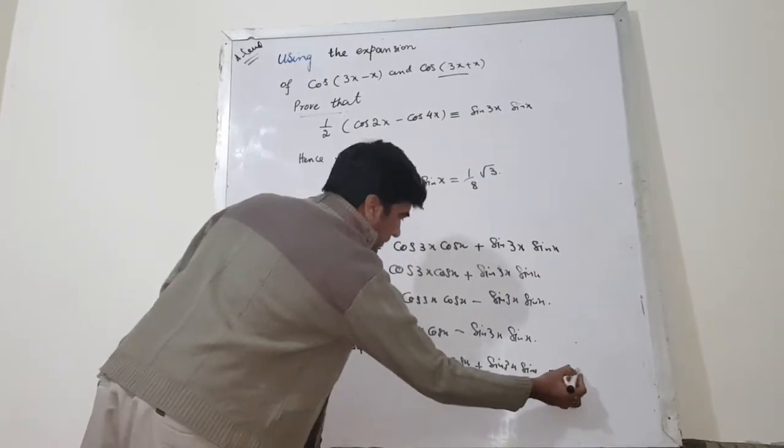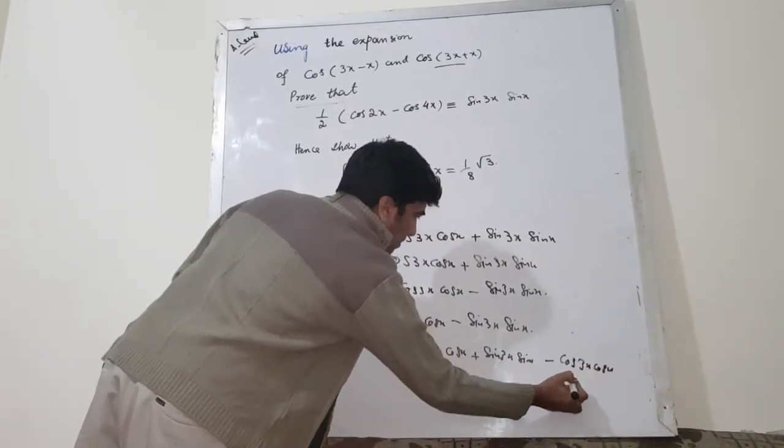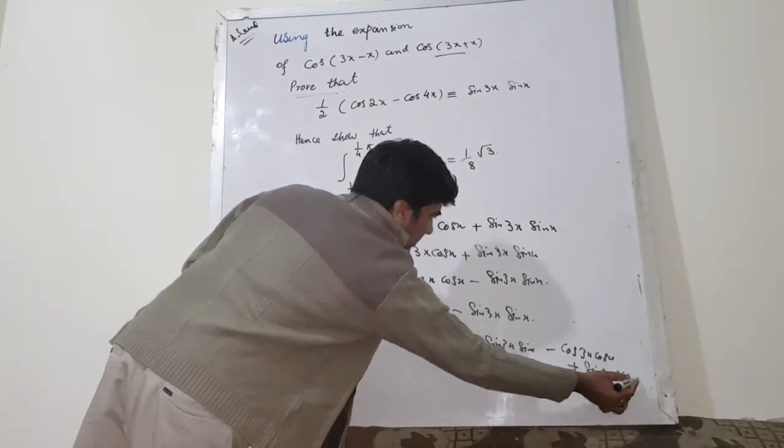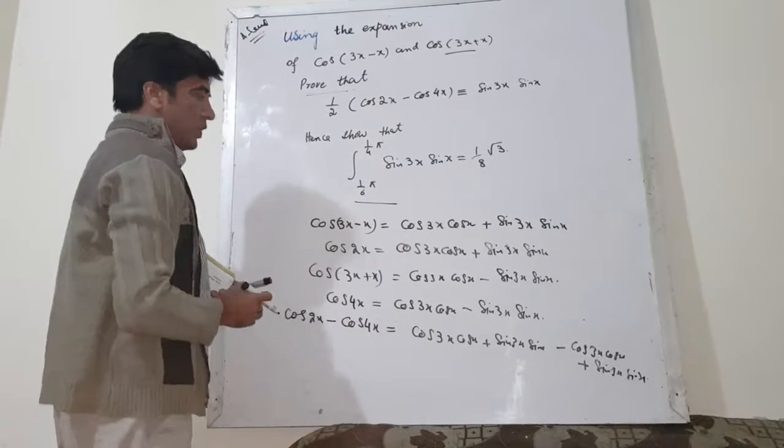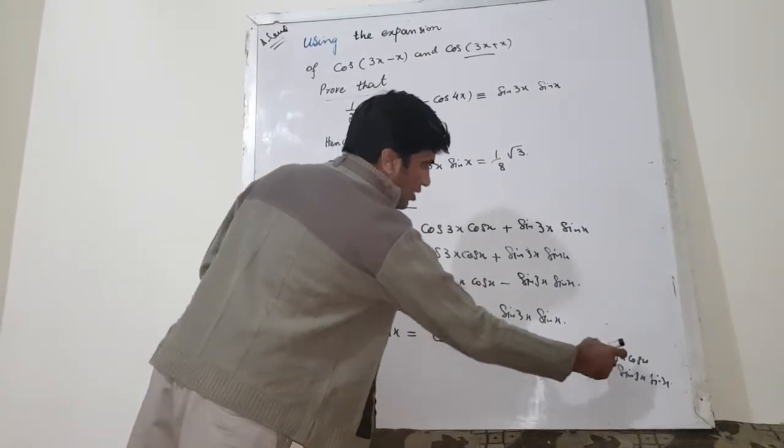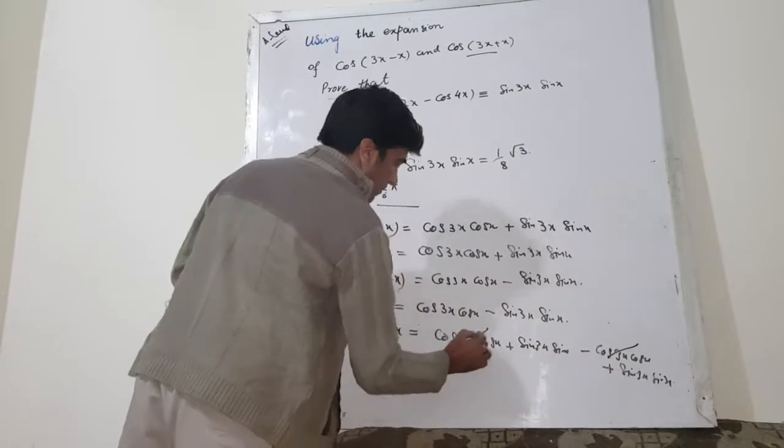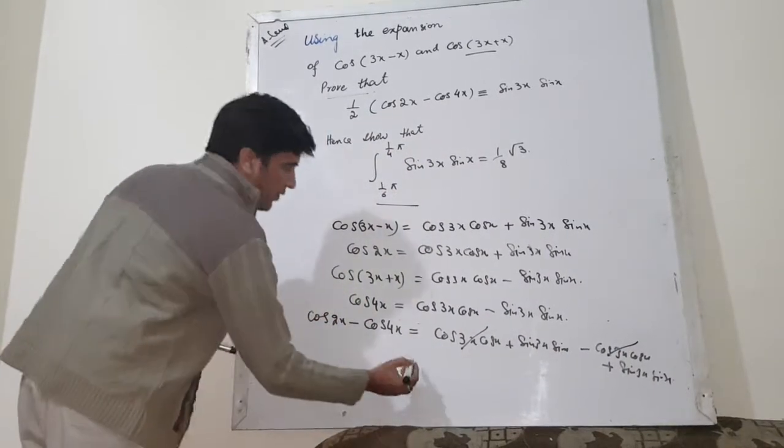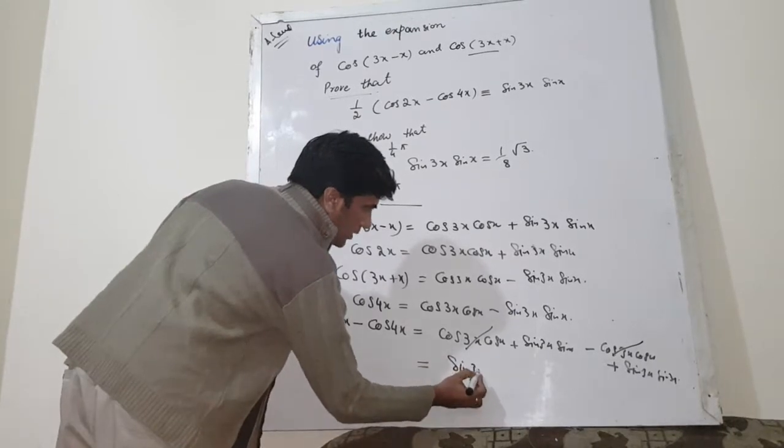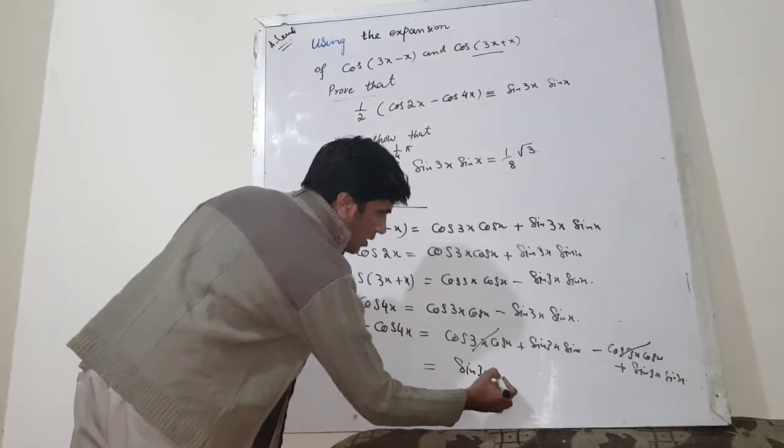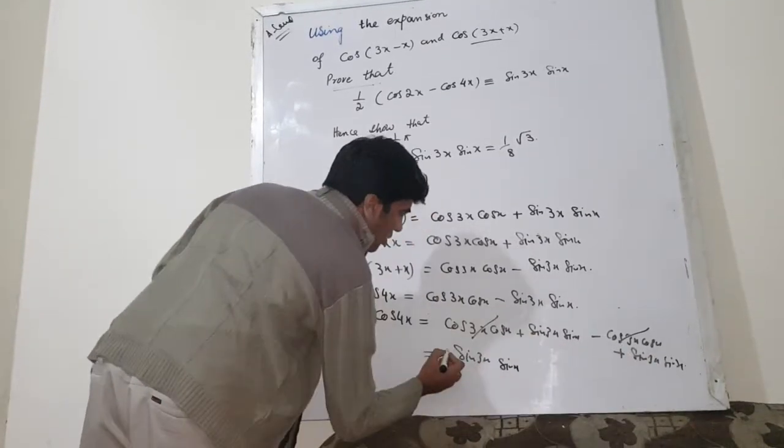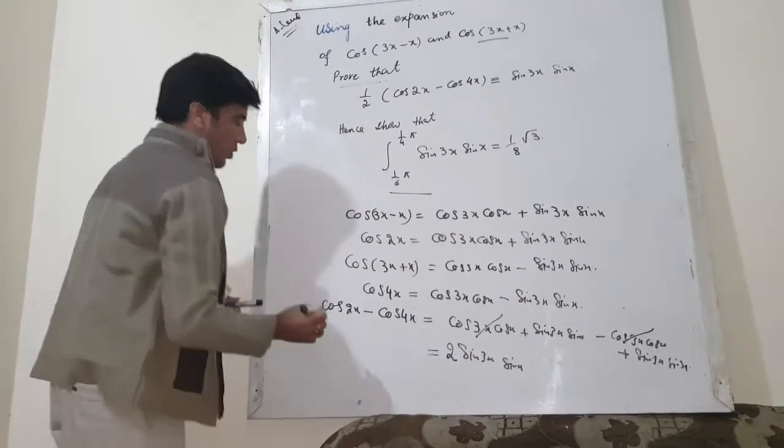Cos 3x cos x minus cos 3x cos x plus sin 3x sin x. You see, cos 3x cos x minus cos 3x cos x and they cancel each other. So, the leftover would be equal to sin 3x sin x and the same term is there. So, by adding, you get this.